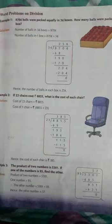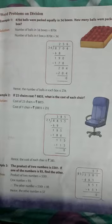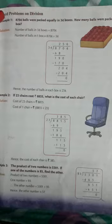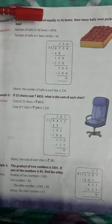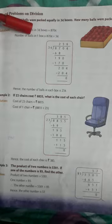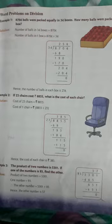Now, we will write a statement. Number of balls in 34 boxes is equal to 8704. Number of balls in one box is equal to 8704 divided by 34.